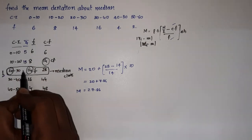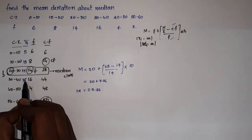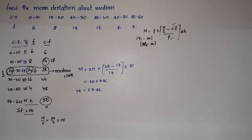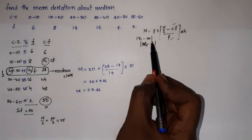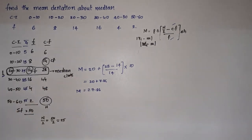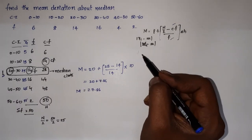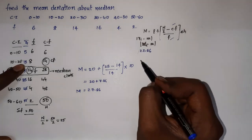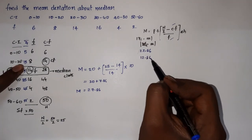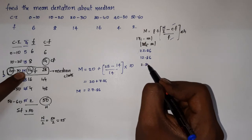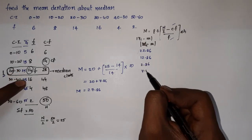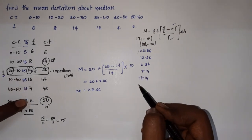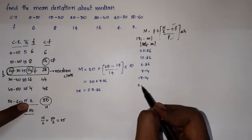Mid values xi: 5, 15, 25, 35, 45, 55. Now |xi − Median| where Median = 27.86: |5 − 27.86| = 22.86, |15 − 27.86| = 12.86, |25 − 27.86| = 2.86, |35 − 27.86| = 7.14, |45 − 27.86| = 17.14, |55 − 27.86| = 27.14.